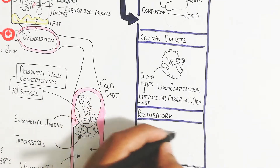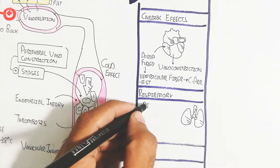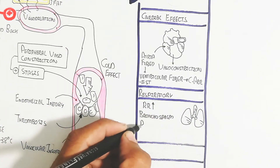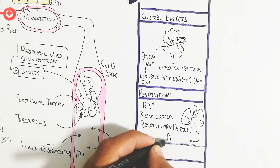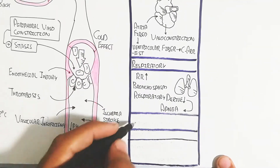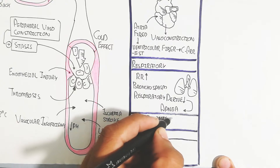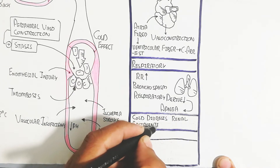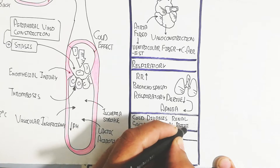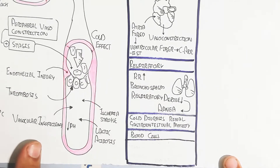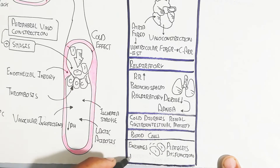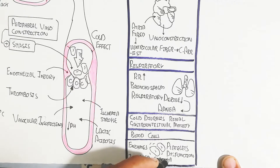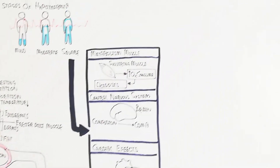Regarding respiratory effects, the respiratory rate initially increases, and cold air entering the lungs causes bronchospasm, making a mask important for protection. Respiratory drive then decreases, leading to apnea. Cold diuresis and reduced renal and gastrointestinal motility also occur. Blood cell and platelet dysfunction along with enzyme impairment leads to coagulopathy.